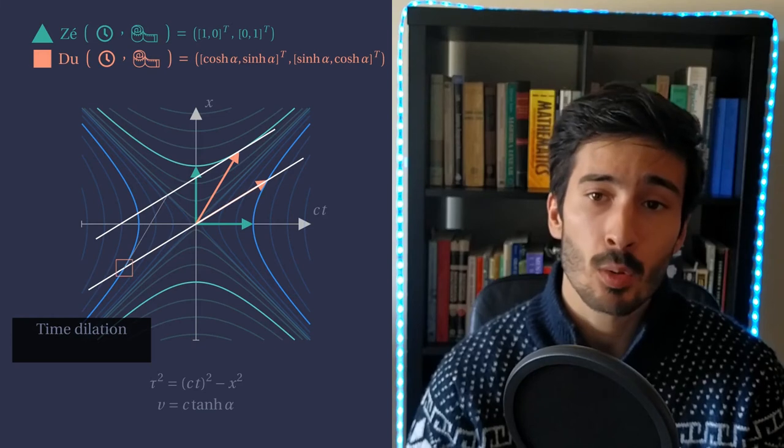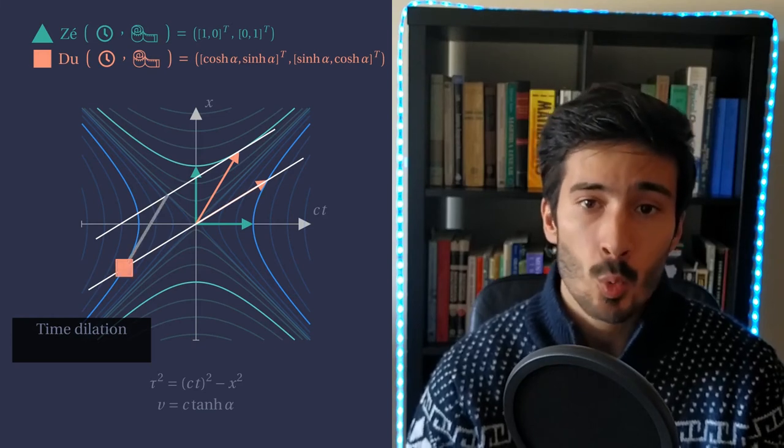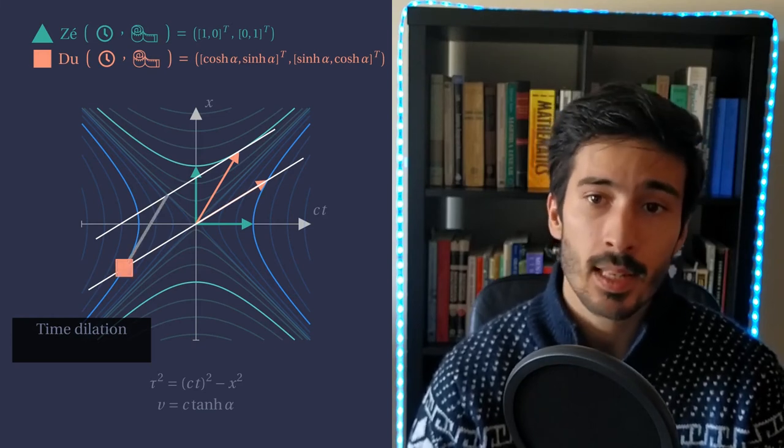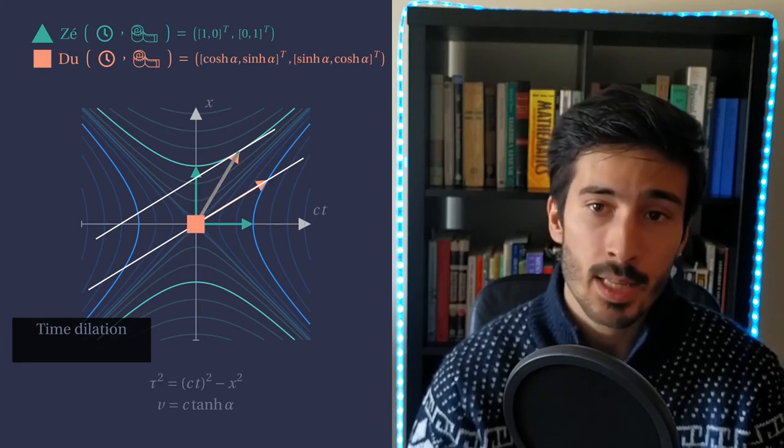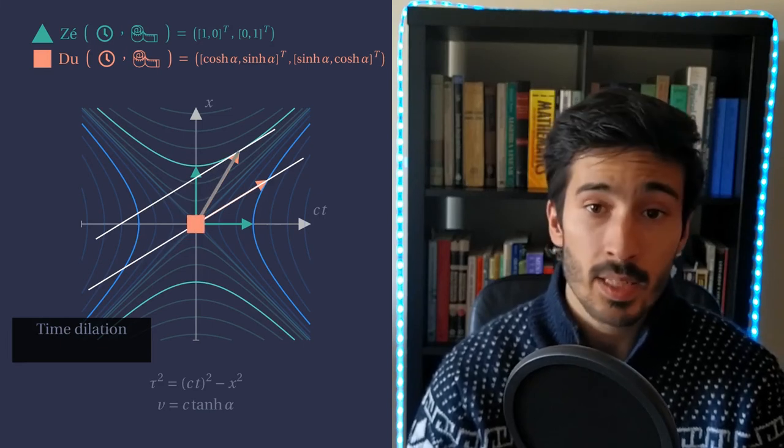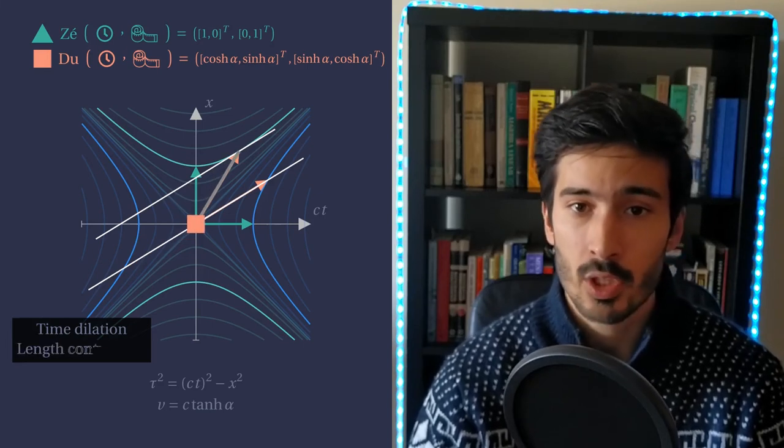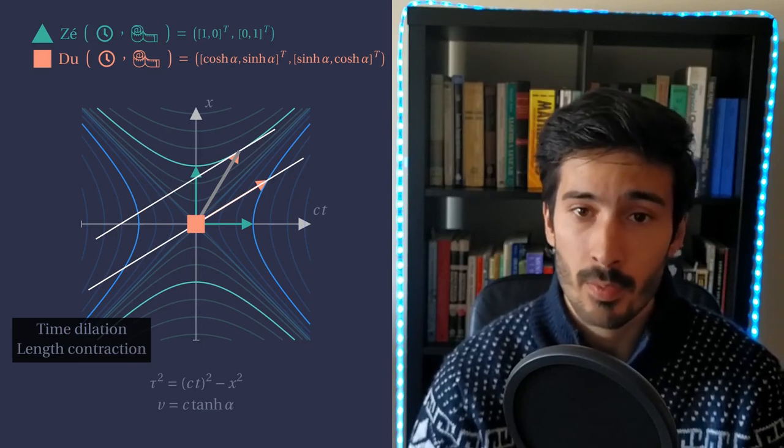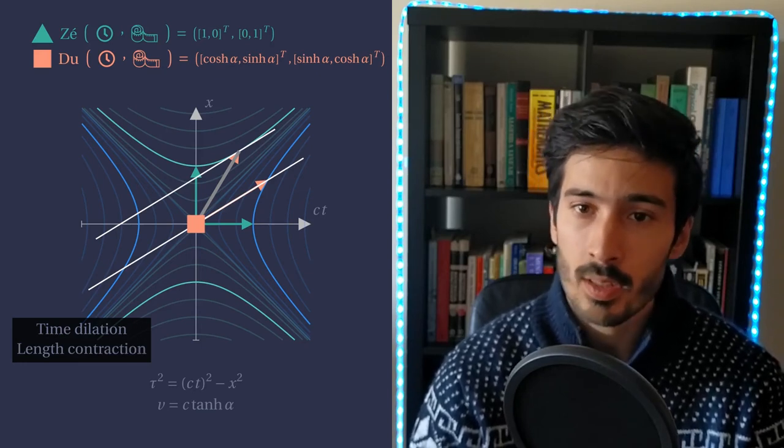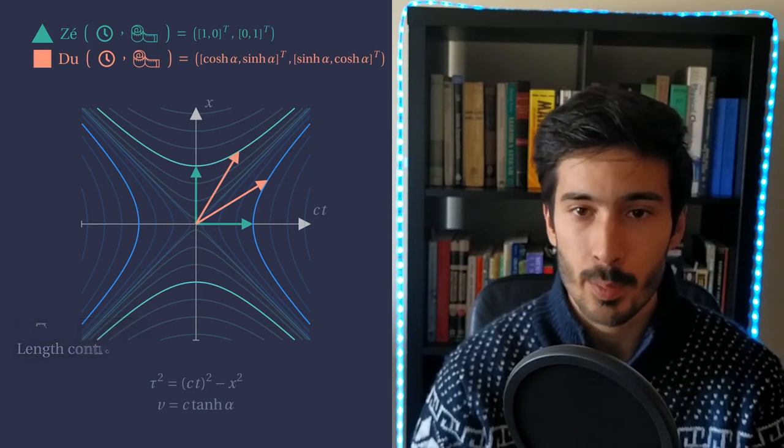Let's again imagine that Du is holding a bar of length 1. When he is passing by Ze, what is the length of the bar? We can see that Ze measures the bar as being smaller than 1. This means that there is length contraction. These are precisely the opposite effects to the ones we found before. However, they don't particularly match our day-to-day experience.